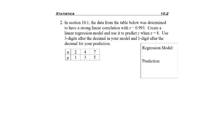Example 2. In section 10.1, the data from the table below was determined to have a strong linear correlation with 0.993. We're asked to create a linear regression model and use it to predict Y when X is 8. We'll use three digits after the decimal for the model, but in our prediction we're only going to use one digit.